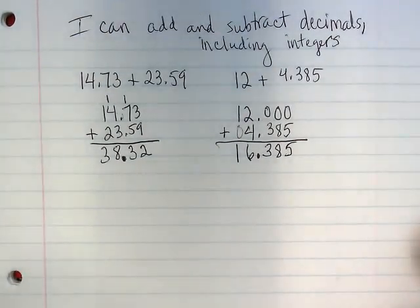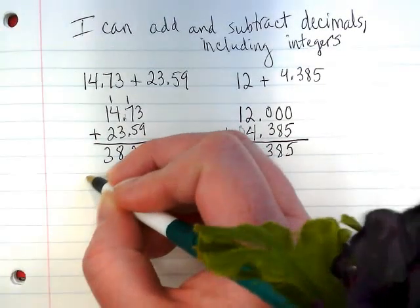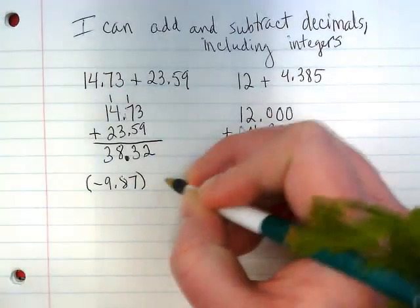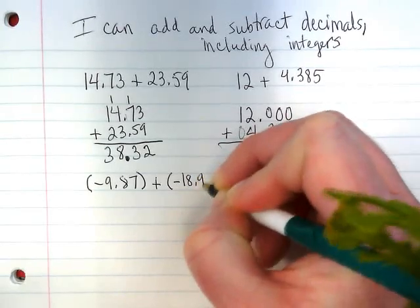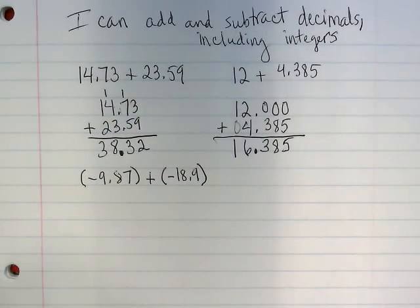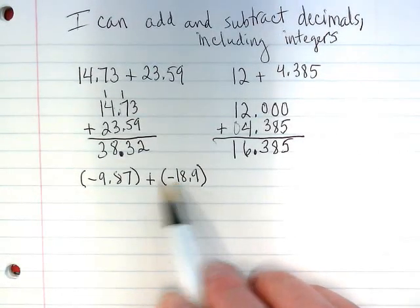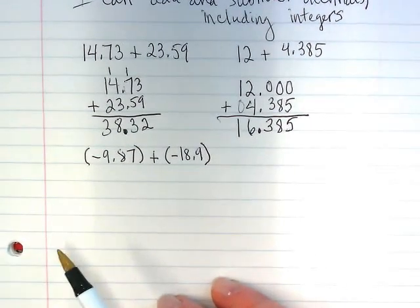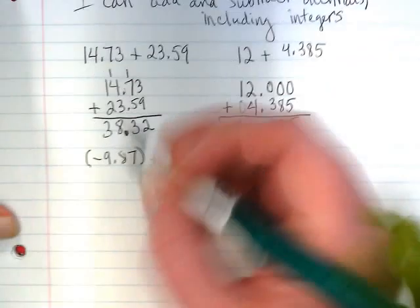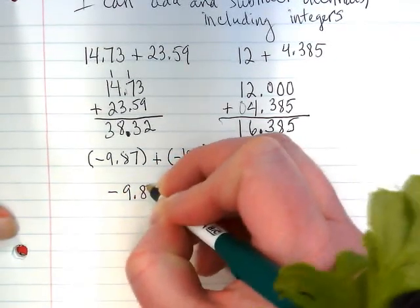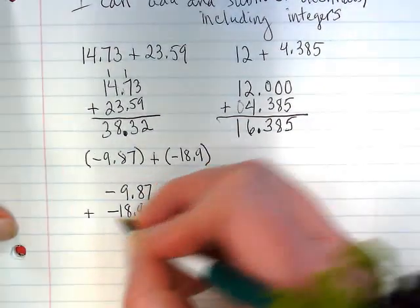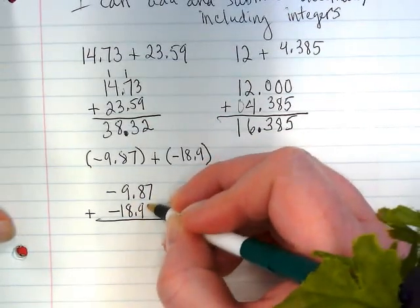So far this should feel like review, but let's throw some in with negatives. You might see something in your book that looks like this. Those parentheses are just there to hold the negative with the number — whenever we have a positive and a negative, or two signs, we put parentheses to separate them. When I rewrite this, I don't even need to keep the parentheses because when I line it up, I can put a placeholder zero here.